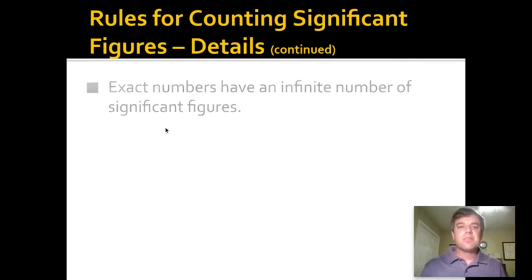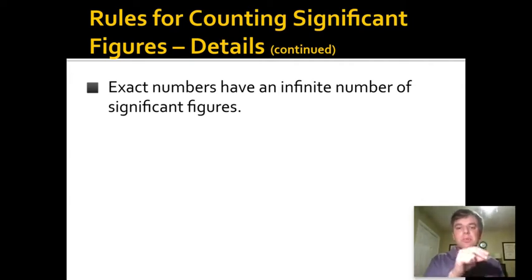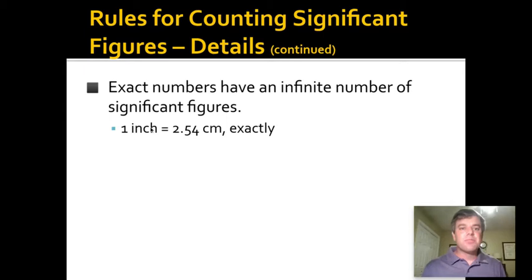There is one exception to all of this stuff with significant figures, and that is things that are not measurements but exact numbers. If you are counting things that you can actually see, those have an infinite number of significant figures. For instance, if you're counting the number of eggs in your refrigerator, you're infinitely sure it's exactly seven eggs in your refrigerator. There's not seven and a half eggs—you either have an egg or you don't. Same thing works when you're counting people: you either have a person or you don't have a person. You don't have half of a person.